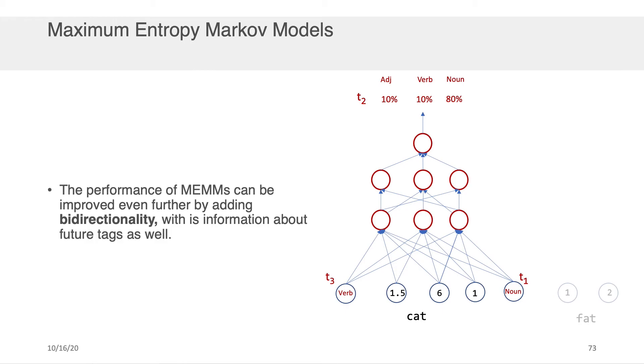So the performance of maximum entropy Markov models can be improved even further by adding something called bidirectionality. Now, this is just me saying, well, if it worked well to borrow from the previous time step when trying to predict this particular step, it'd be even greater if I maybe took something from the future as well, if I took what my prediction was from T3 when I wanted to predict this outcome.